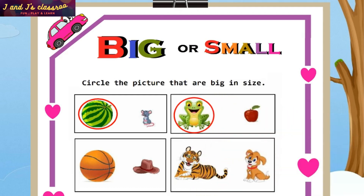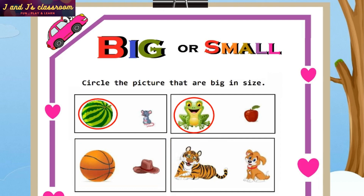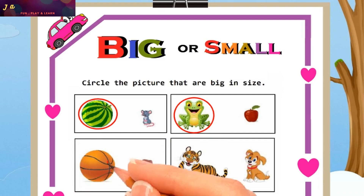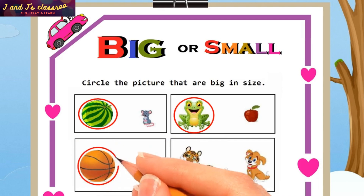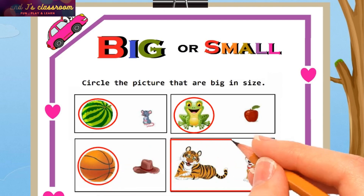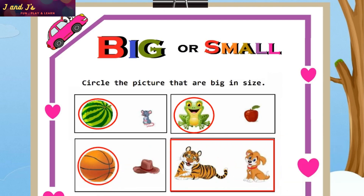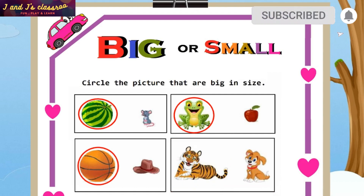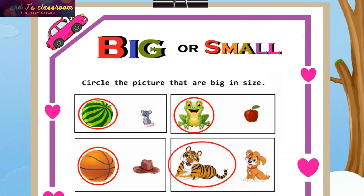Next — ball and hat. Which one is looking big in size? Ball! Okay, circle the ball. The last one — tiger or dog. Which one is big? Tiger! Yeah, of course — circle the tiger.